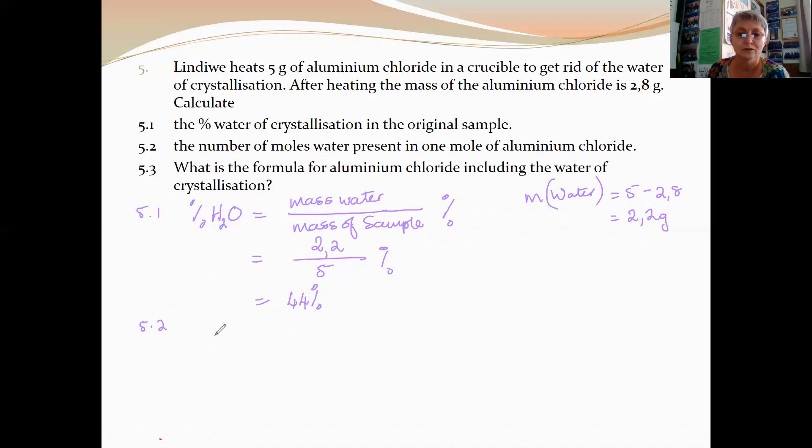First of all, we need to sort out the anhydrous aluminium chloride's formula. Aluminium's valency is 3. Chlorine's valency is 1. So the formula for aluminium chloride is AlCl3. The formula for water is H2O.